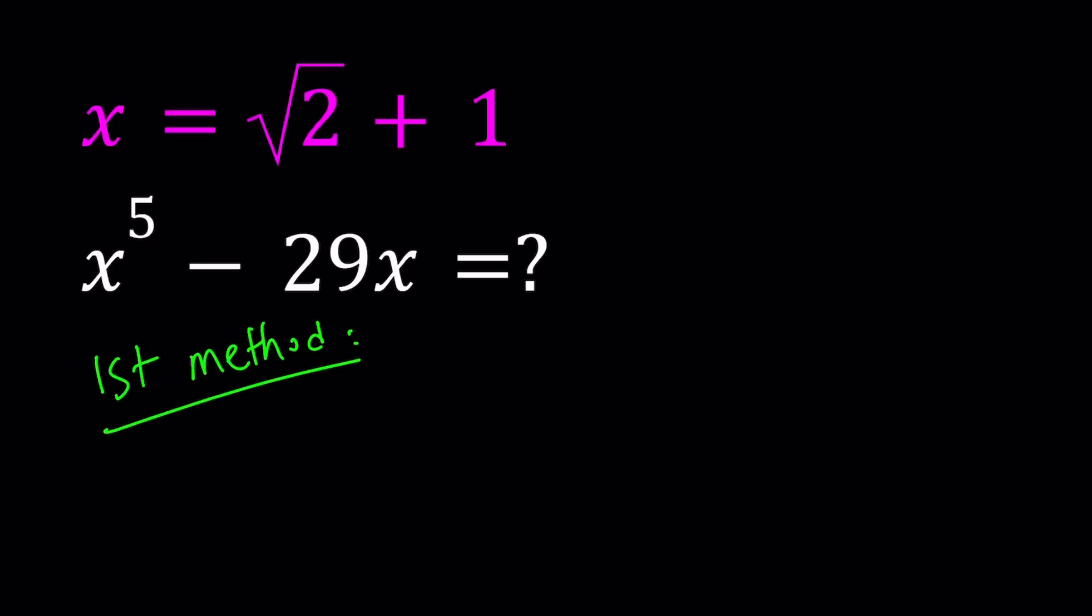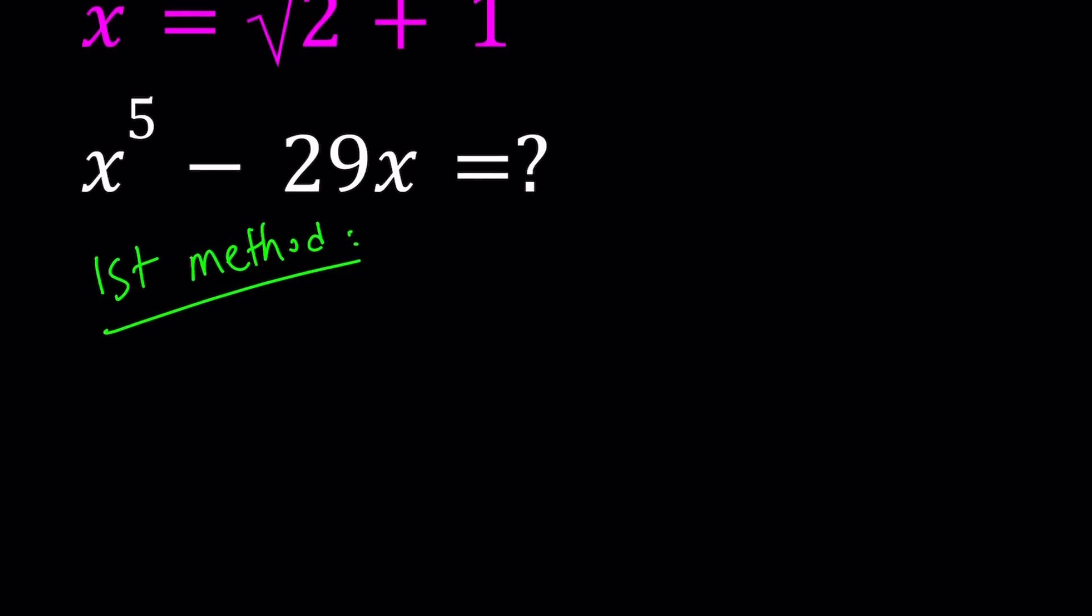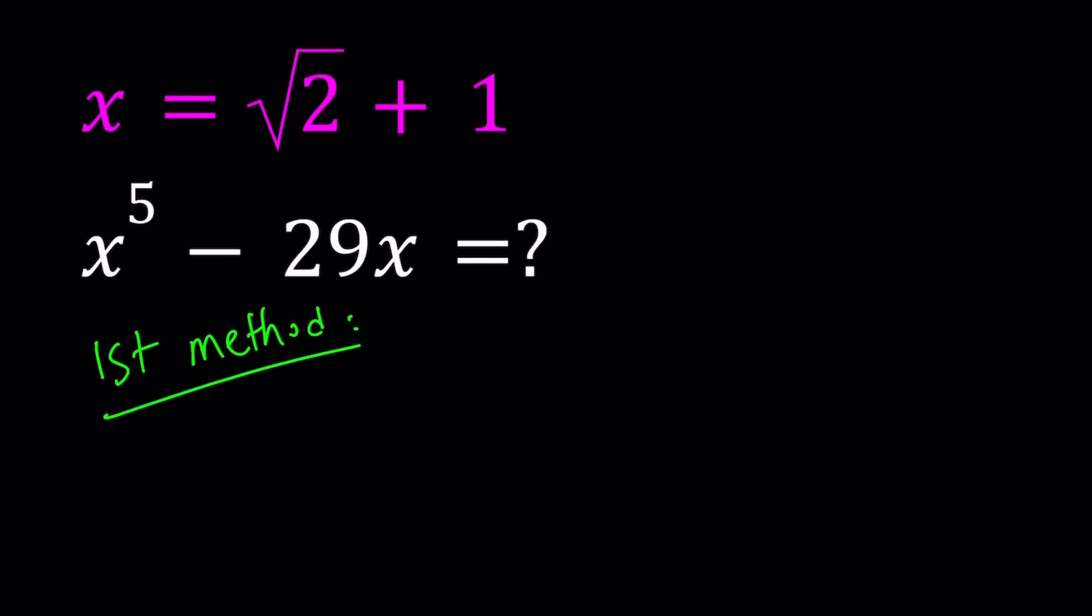For the first method, I'm going to do the following: just substitute x. Since x is given as square root of 2 plus 1, I can go ahead and evaluate this expression by plugging in square root of 2 plus 1 for x.